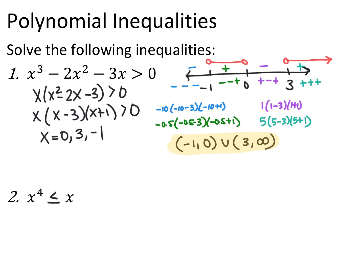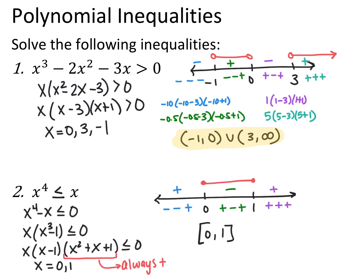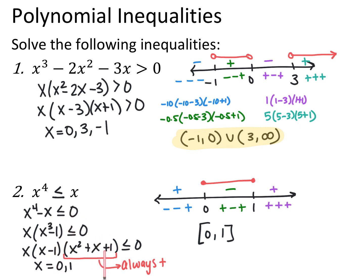For the second one, we have x to the 4th is less than or equal to x. Same idea — make one side equal to 0 by subtracting x, giving x to the 4th minus x. Factor out the GCF of x: x times x cubed minus 1 is less than or equal to 0. This is a difference of cubes, so x cubed minus 1 factors into x minus 1 times x squared plus x plus 1. Same sign, opposite sign, always positive — so negative, positive, positive.